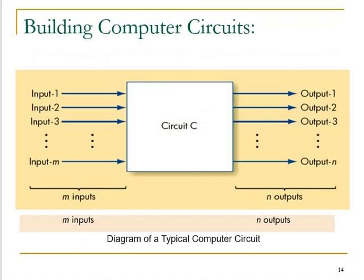Finally, coming to building computer circuits. A circuit is a collection of logic gates — we have seen the three basic logic gates: AND, OR, and NOT. We also have universal gates, XOR gates, XNOR gates, and a large collection of other logic gates. A circuit transforms a set of binary inputs into a set of binary outputs, and the values of the outputs depend only on the current values of the inputs. As shown, circuit C has M inputs which produce N number of outputs.